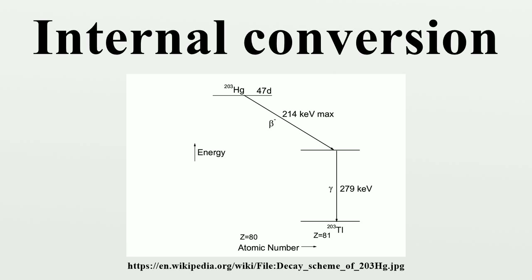As an example, consider the decay of 203 Hg. The decay scheme shows that 203 Hg produces a continuous beta spectrum with maximum energy 214 keV, that leads to an excited state of the daughter nucleus 203 Tl. This state decays very fast to the ground state of 203 Tl, emitting a gamma quantum of 279 keV. The electron spectrum of 203 Hg, measured by means of a magnetic spectrometer, shows the continuous beta spectrum and also the K, L, and M lines due to internal conversion.